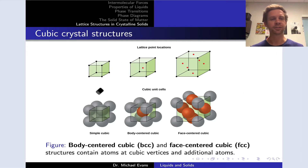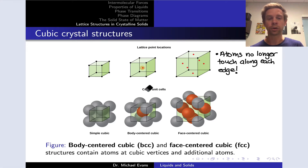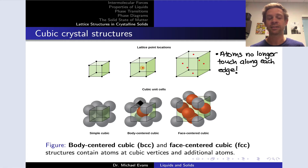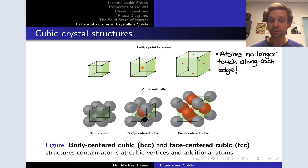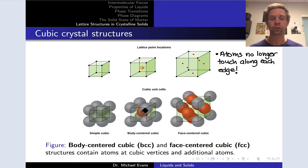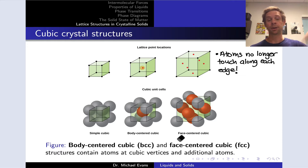We've already looked at the simple cubic, shown on the left-hand side of this figure. In the middle, we have a structure where there's an atom sitting at the center of the simple cubic lattice, highlighted in orange. The atoms are no longer touching along an edge. Where atoms are touching is with the atom at the center of the unit cell body — along a diagonal running from a front top left corner to the back bottom right corner.